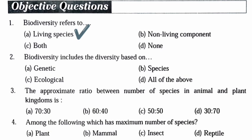Next question: Biodiversity includes the diversity based on — genetic, species, ecological, or all of the above? Biodiversity encompasses all the variety of living organisms based on genetic, species, and ecological levels. So the answer is all of the above.